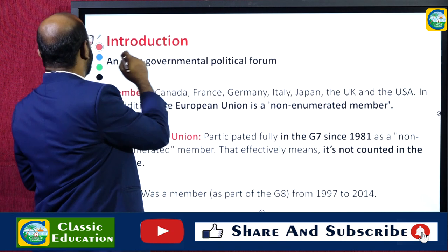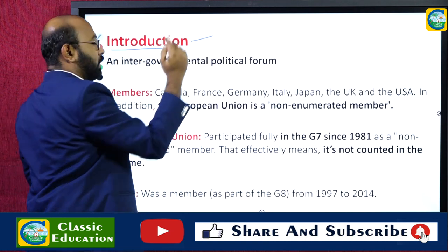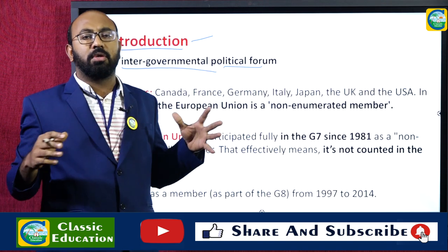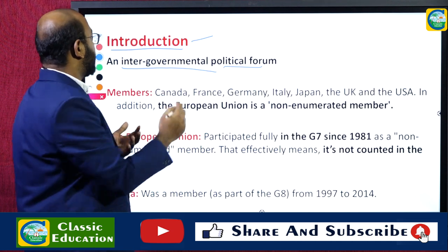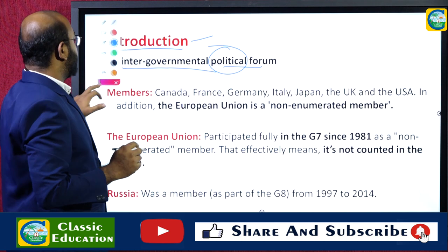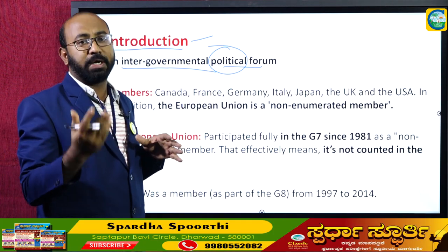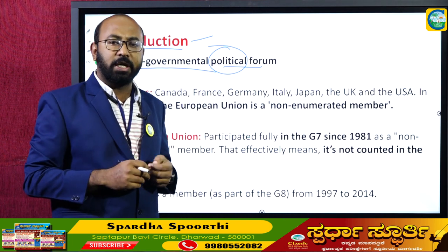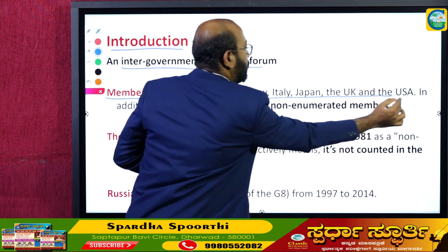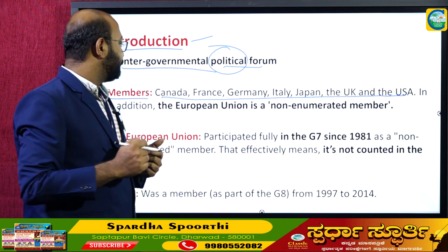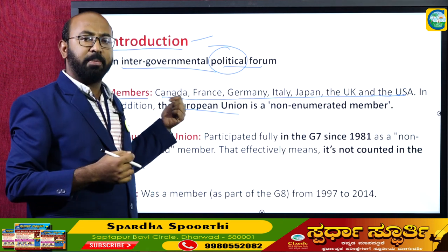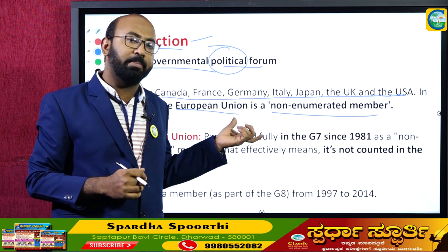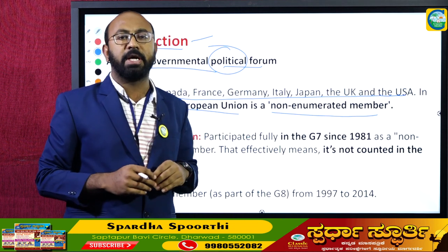The G7 is an intergovernmental political forum organized around political issues. As the name suggests, it is the group of seven countries: Canada, France, Germany, Italy, Japan, the United Kingdom, and the United States of America. There is one additional member — the European Union — but it is counted as a non-enumerated member.